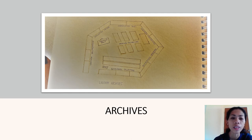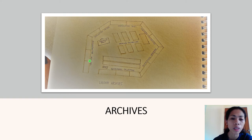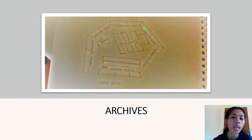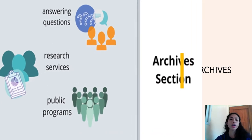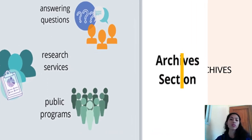The archive section is the institutional repository of the library. The blueprint provides a big, wide space with collections such as photographs of the president, awards, certificates, and so on. These should be maintained at a controlled temperature. The academic library archives' services include answering questions, supporting research, providing public programs, and exhibitions that occur during institutional events.